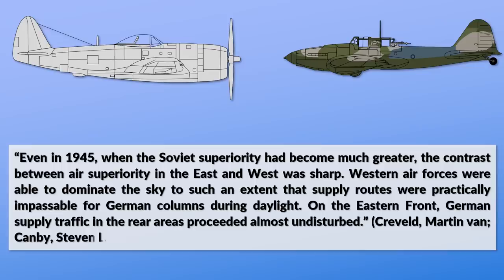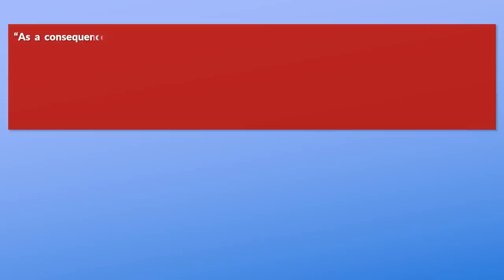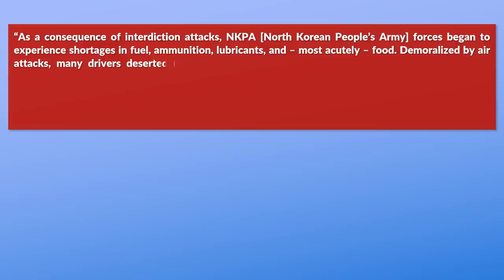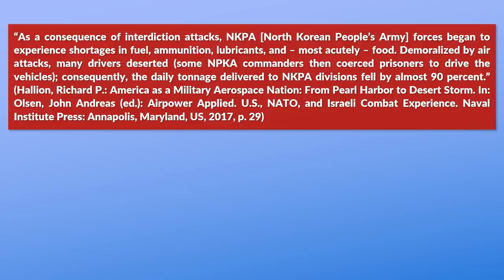Interdiction attacks proved especially effective against North Korean forces advancing in 1950. As a consequence, North Korean People's Army forces began to experience shortages in fuel, ammunition, lubricants and, most acutely, food. Demoralized by air attacks, many drivers deserted. Some NKPA commanders then coerced prisoners to drive vehicles. Consequently, the daily tonnage delivered to NKPA divisions fell by almost 90 percent.